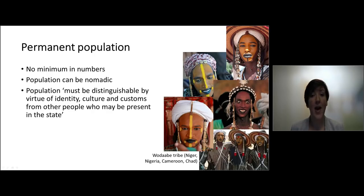The first is to have a permanent population. There is no requirement in numbers. So there is no minimum amount of people to be part of the population. And the population can even be nomadic, as is the tribe that you see here. What you do need is a population that can be distinguished from others within the territory. And they can be distinguished based on their culture, on their habits, on their identity. If you can have a certain culture or identity, then you know that it is a population, part of the state.